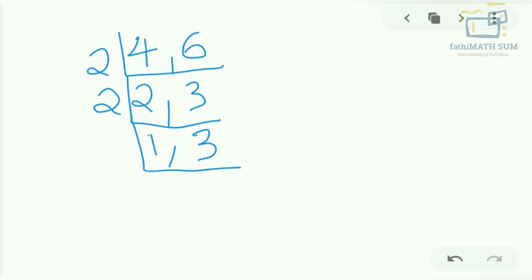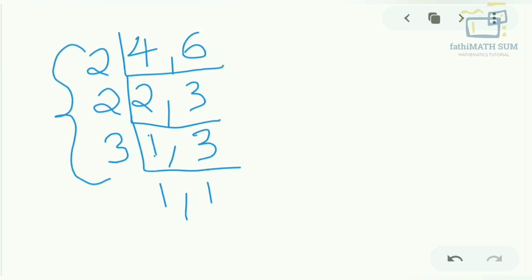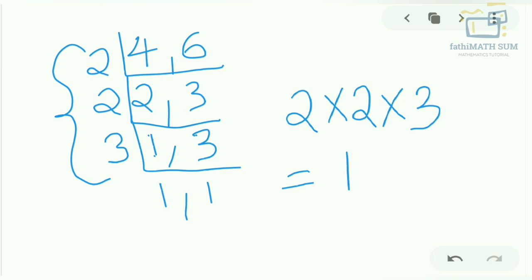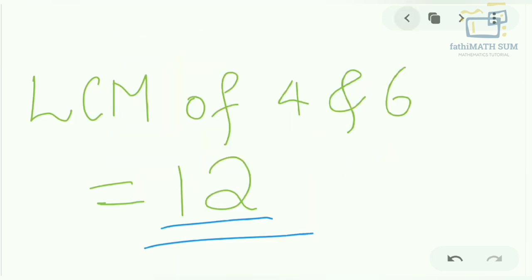We keep the number 3 as it is. In the next step, divide by the next prime number, which is 3. Here 3 is divisible by 3 once, giving 1. When all the quotients become 1, we stop and multiply all the numbers on the left side. The product gives the LCM: 2 × 2 × 3 = 12.